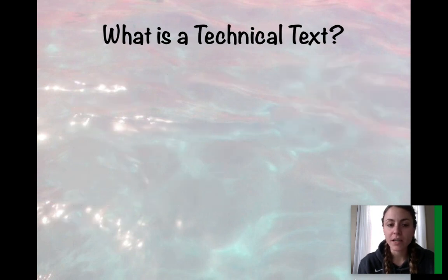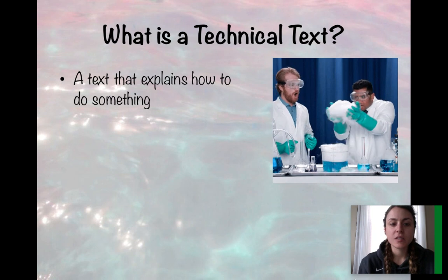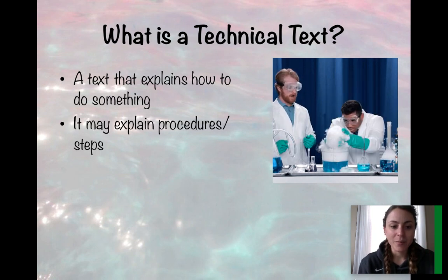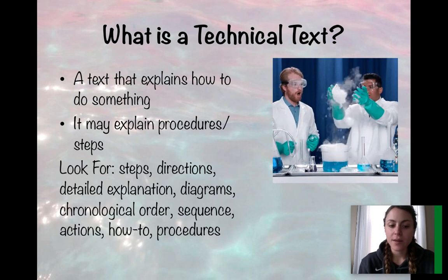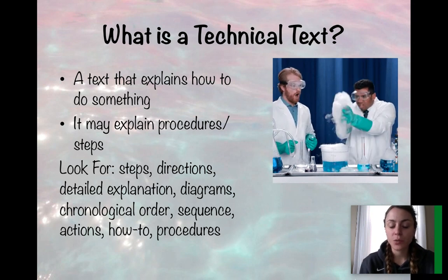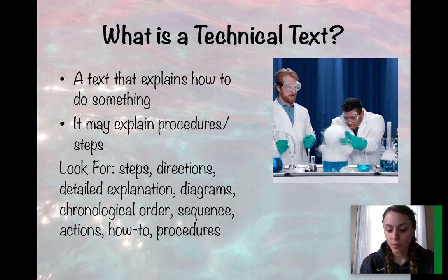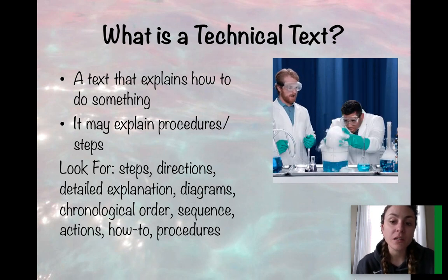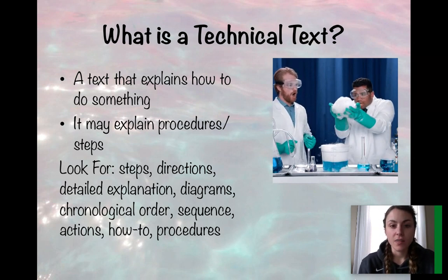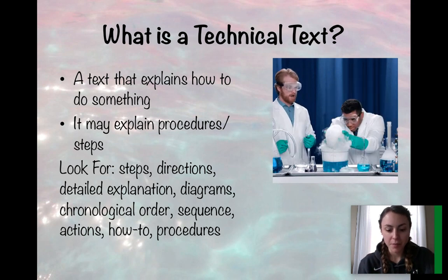What is a technical text? It is a text that explains how to do something, kind of like a scientific experiment, and it may explain procedures and steps. We look for steps, directions, detailed explanations, diagrams, chronological order, sequence, actions, how-to guides, and procedures. Some other examples of technical text would be recipes and instructions on how to bake a chocolate chip cookie, and they would have to be in sequential order or you would mess them up.